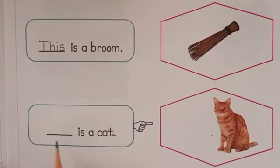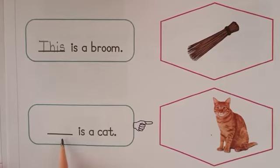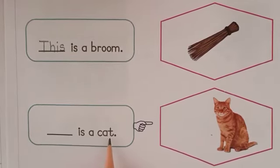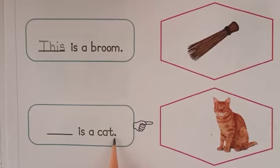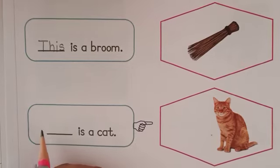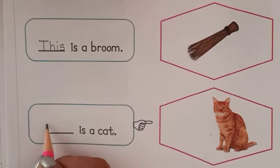Now next one: dash is a CAT. Full stop. Pointer is there. That means the CAT is far. So we will write 'that'.